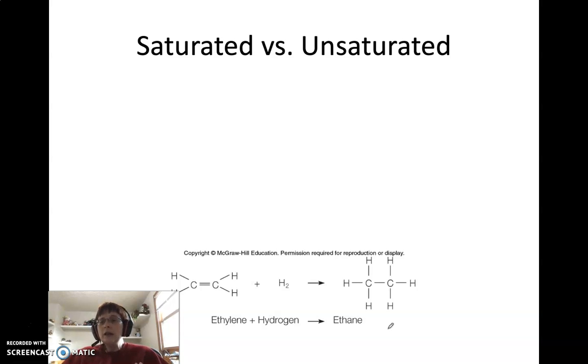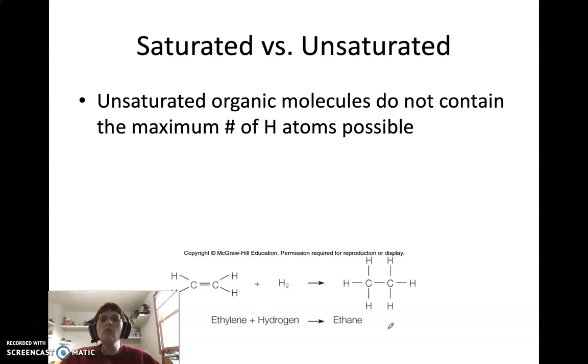So this allows us now to talk about the concept of saturated versus unsaturated hydrocarbons. So an unsaturated organic molecule does not contain the maximum number of hydrogen atoms possible. So what do we mean by that? The maximum number of hydrocarbons in an organic molecule means that there are no double bonds. So if there are double bonds or triple bonds between the carbons, then you know that you have an unsaturated organic molecule. Because what we're talking about with saturated versus unsaturated is the hydrogen atoms.